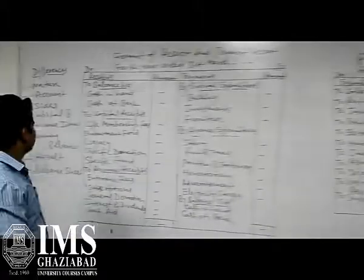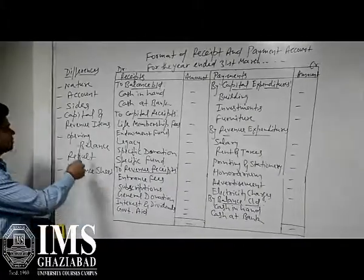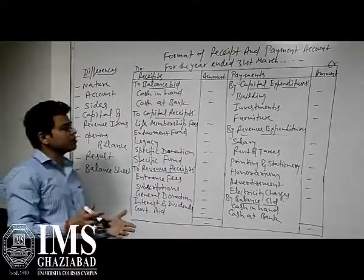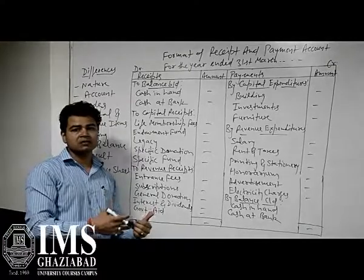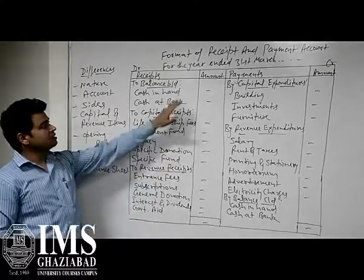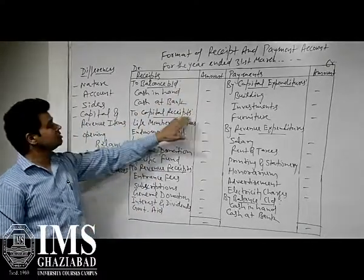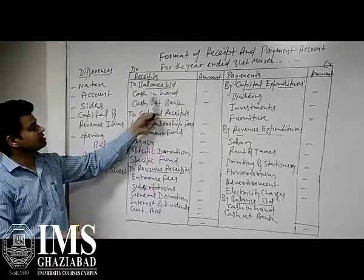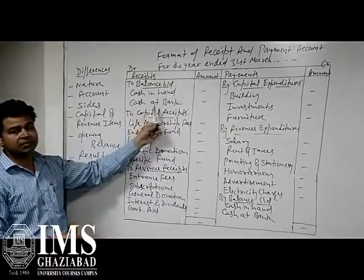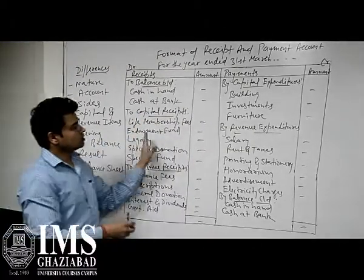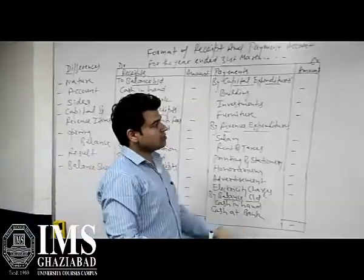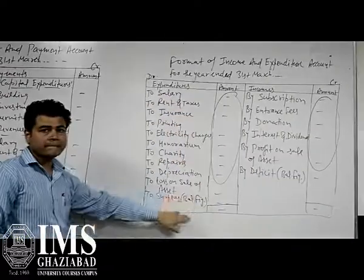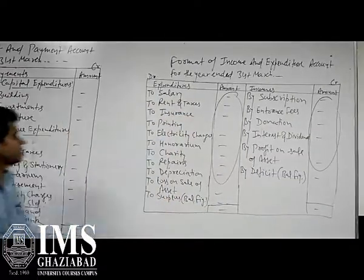The next point of difference is the opening balance. The Receipts and Payment Account starts with an opening balance of cash in hand and cash at bank. But the Income and Expenditure Account has no opening balance.